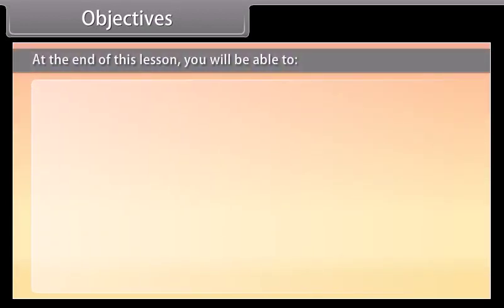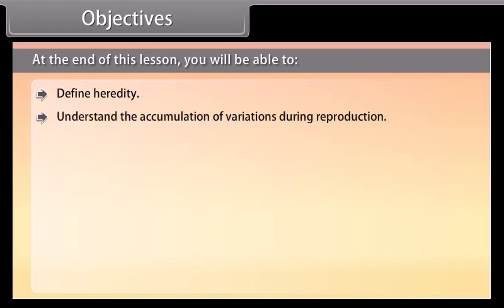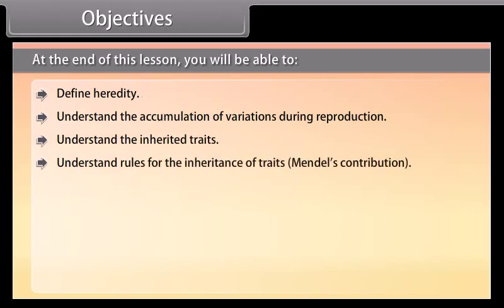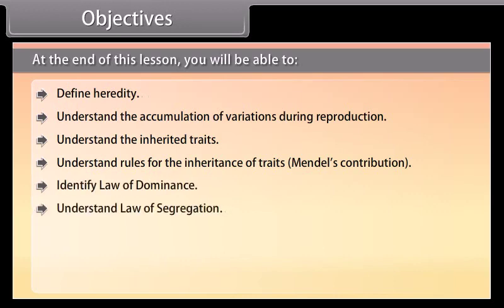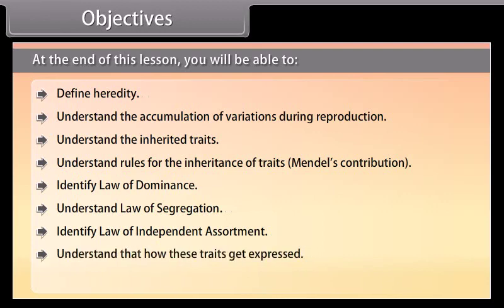Objectives. At the end of this lesson, you'll be able to define heredity, understand the accumulation of variations during reproduction, understand the inherited traits, understand rules for the inheritance of traits, Mendel's contribution, identify law of dominance, understand law of segregation, identify law of independent assortment, understand how these traits get expressed, and understand process of sex determination.